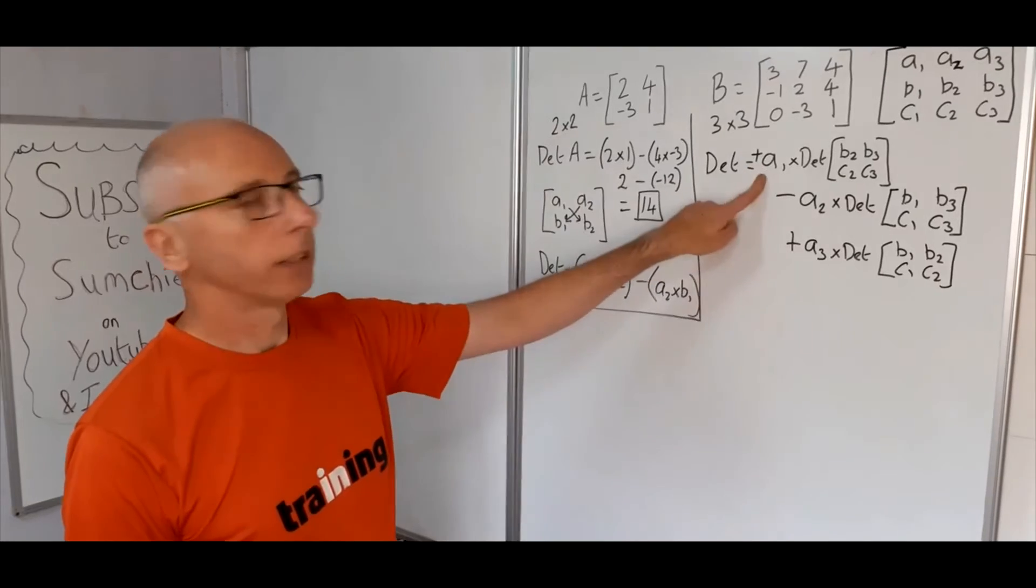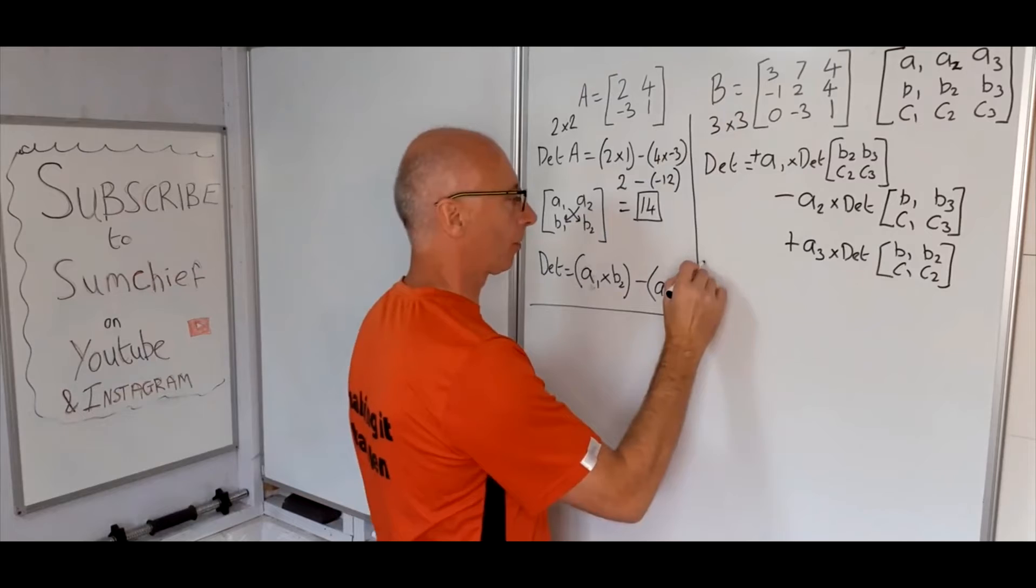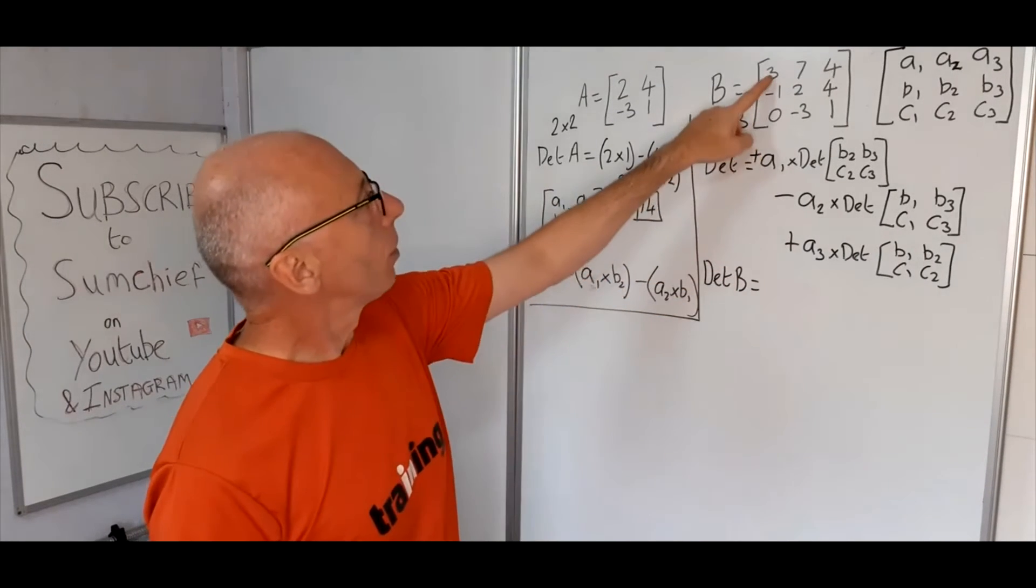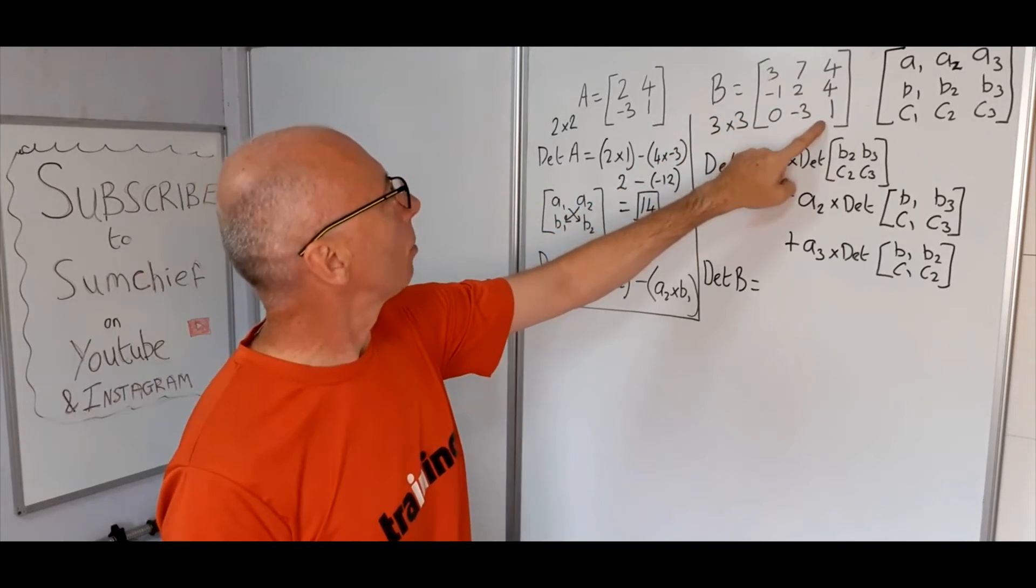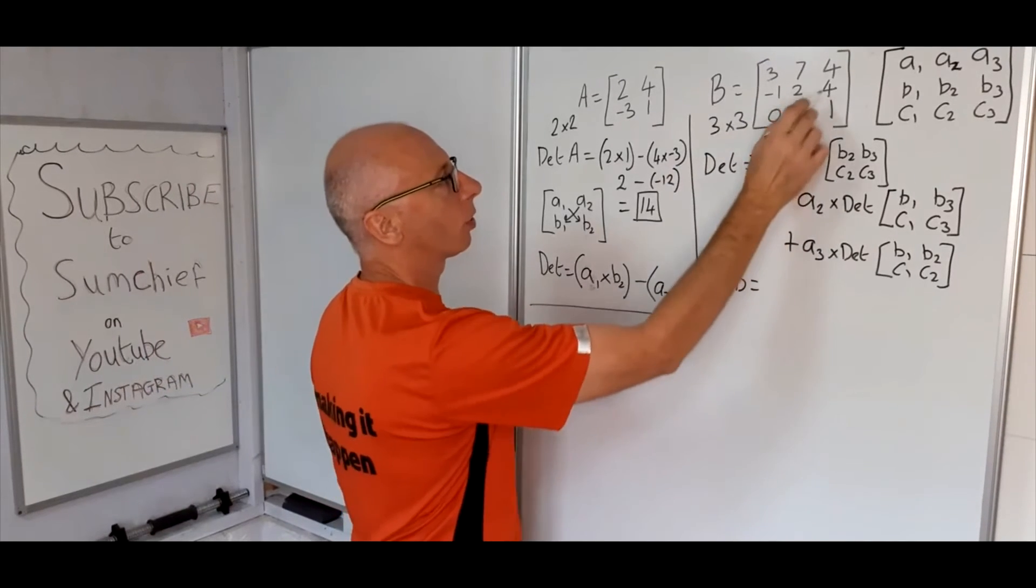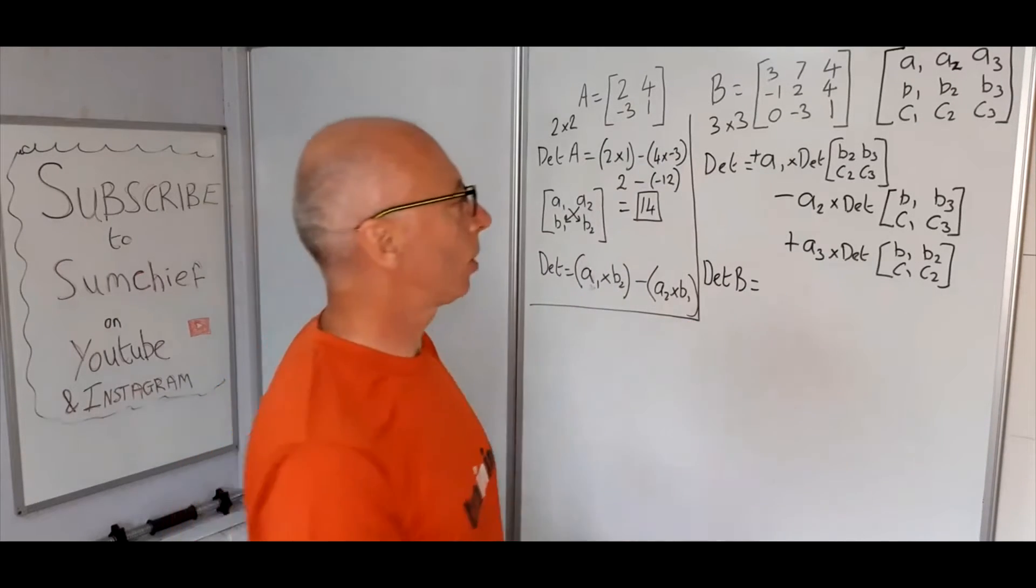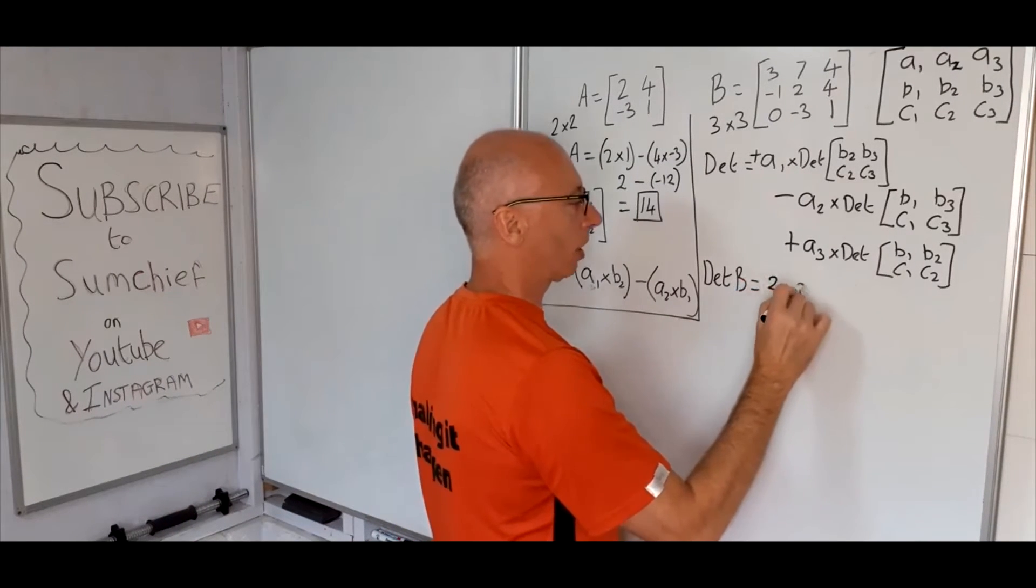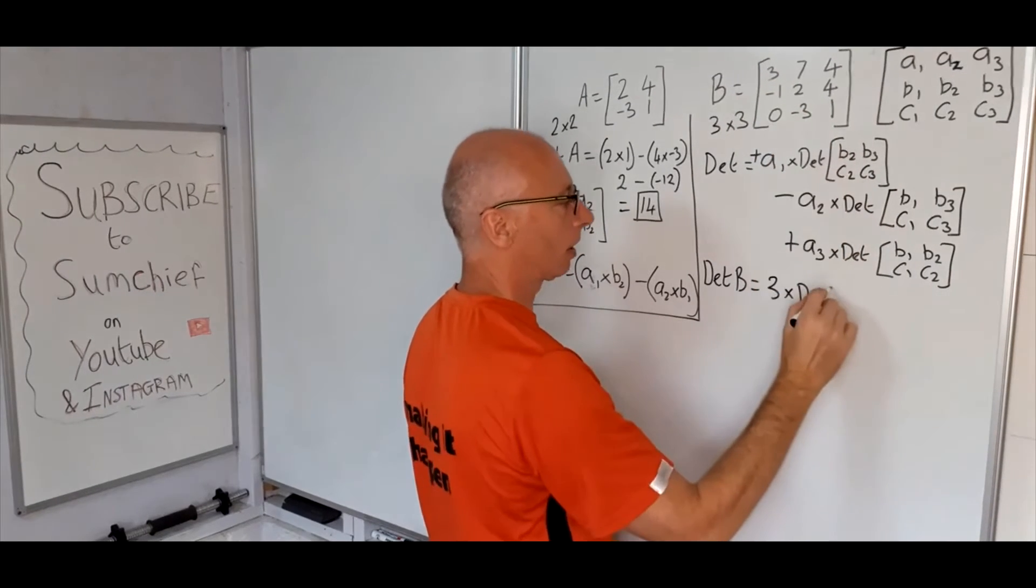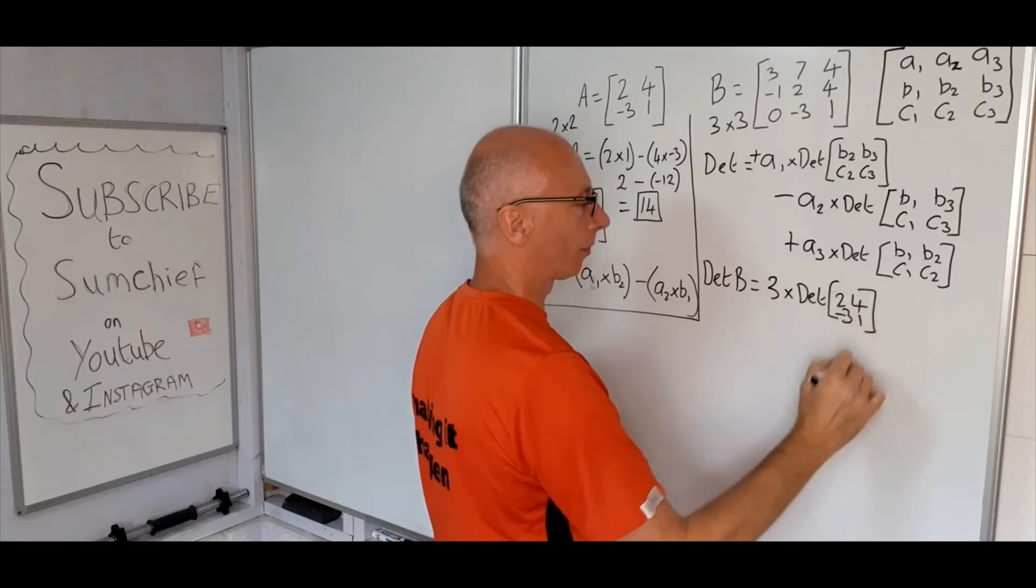Okay, let's put all the numbers in, from this matrix here, and we find the determinant of B. So determinant of B equals 3 times the matrix here, 2, 4, minus 3, 1. Well, this matrix here, 2, 4, minus 3, 1, we've already calculated that out. So I'm just going to write that in there, so as you can see, what we're going to do. So 3 times the determinant, so that's our A1, times the determinant of this matrix here. So that's 2, 4, minus 3, and 1.